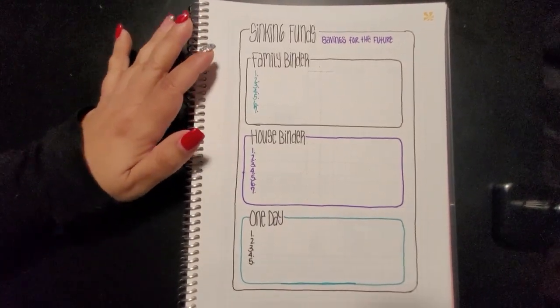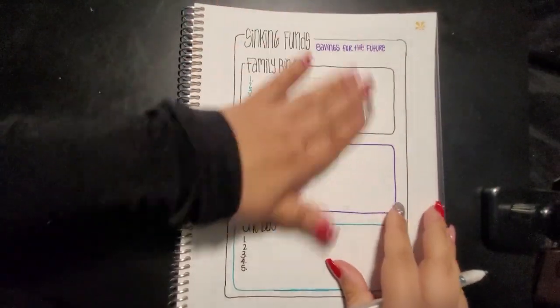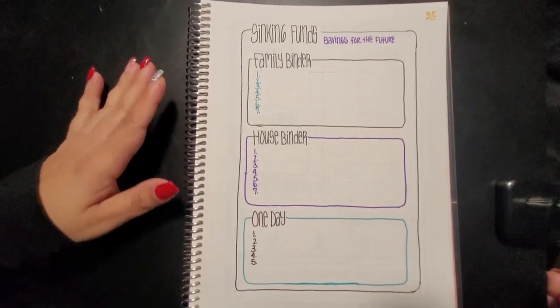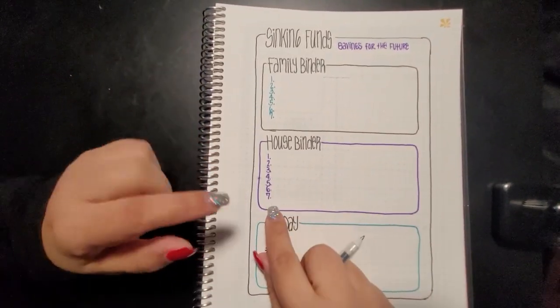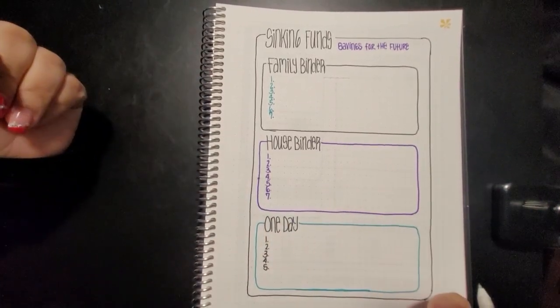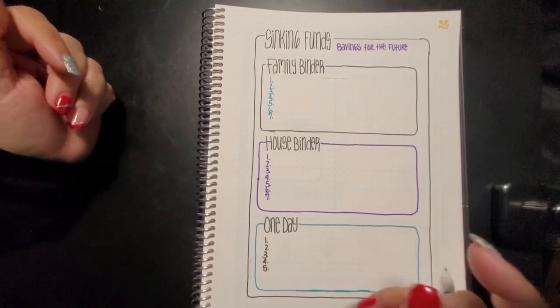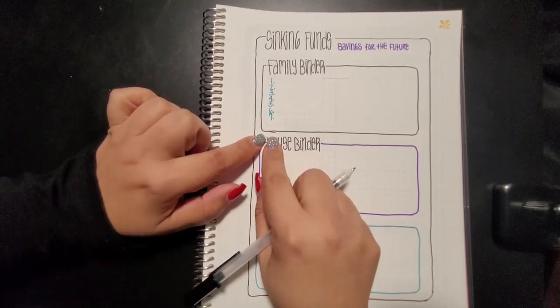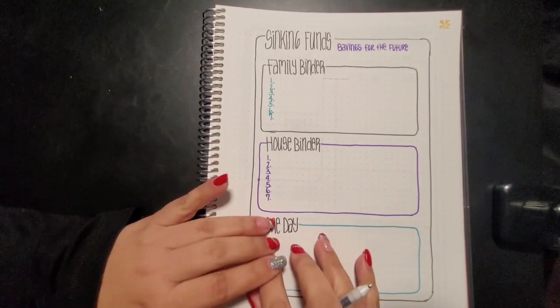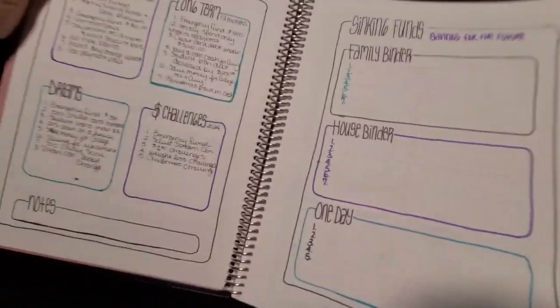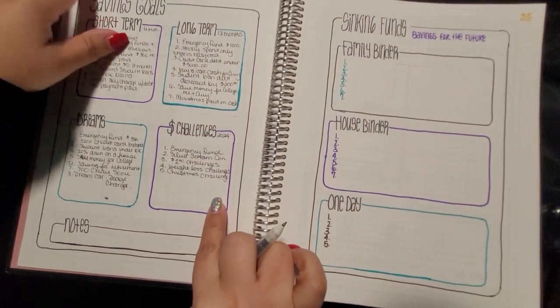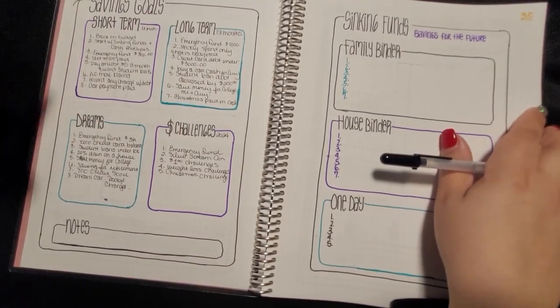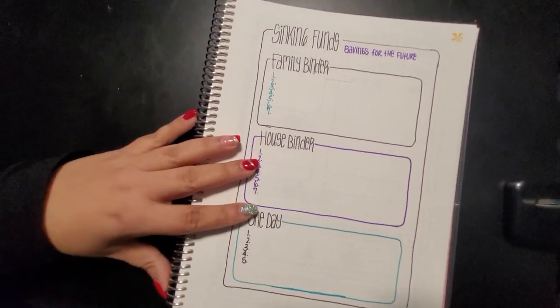Alright, still sick, still the same day, still ranting and raving about nothing. We're moving on to our sinking funds. What are we going to be saving for this year? For my sinking funds I wanted to keep these extremely, extremely simple. So I will be doing three binders this year plus my savings challenges. My savings goals are all in another video which you can go look at.